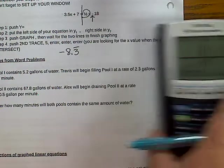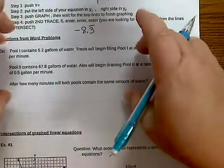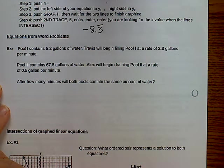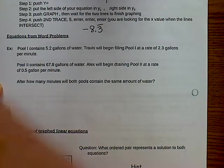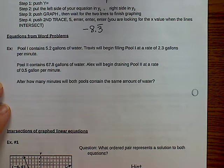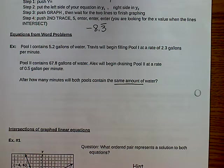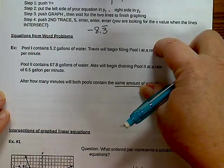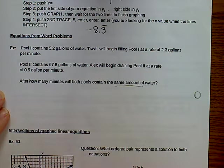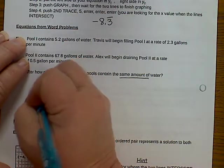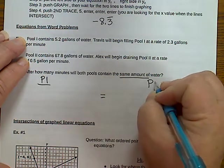Equations from word problems. Remember, how many times have I told you guys you can't work it inside? So I'm going to read this and then I'm going to set it up. Pool 1 contains 5.2 gallons of water. Travis will begin filling pool 1 at a rate of 2.3 gallons per minute. Pool 2 contains 67.8 gallons of water. Alex will begin draining pool 2 at a rate of 0.5 gallons per minute. After how many minutes will both pools contain the same amount? That means I got two equations and I need to set them equal to each other. Now, this type of problem can be the type where you have to write the equation. Then you have to pick it out of multiple choice answers. Or you may have to solve it.